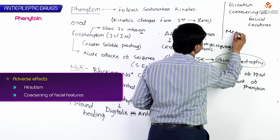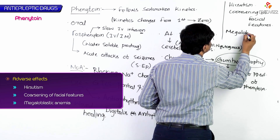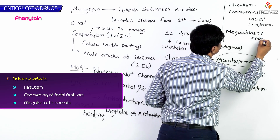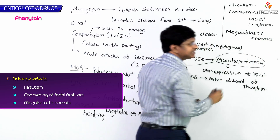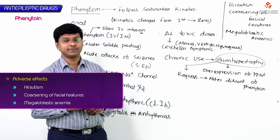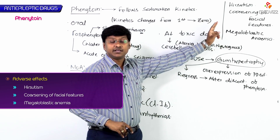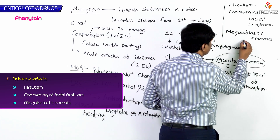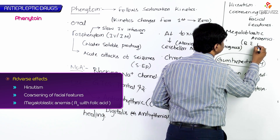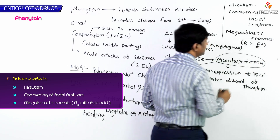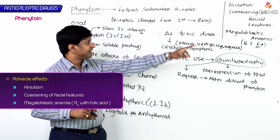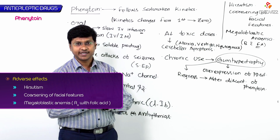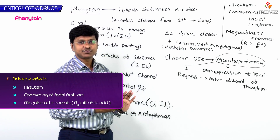Phenytoin can also cause megaloblastic anemia, and phenytoin-induced megaloblastic anemia should be treated with folic acid.